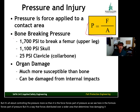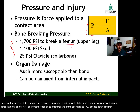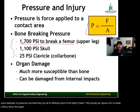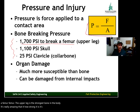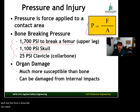These are some examples of pressures and what they can do to different parts of the body. It takes 1,700 pounds per square inch to break a femur — the upper leg, the strongest bone in the body. It's very hard to break a femur. The skull also is very durable; it's very hard to crack a skull, but the forces from a fall can result in pressures far greater than 1,700 psi or 1,100 psi.